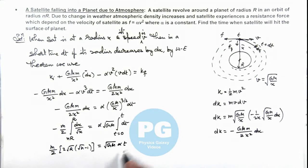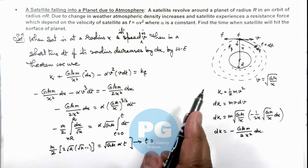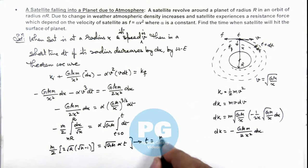And further simplifying this we are getting the value of time after which the satellite will reach the surface of planet is m/(α√gr), here I can take small g is equal to GM/R² which is the acceleration due to gravity.